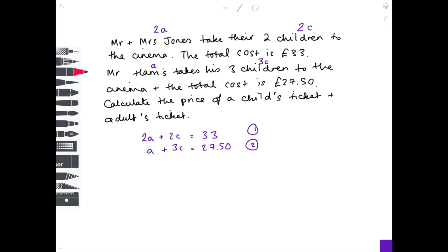Equation 1, equation 2. And I'm going to make the A coefficients the same by multiplying equation 2 by 2. So that becomes 2A plus 6C equals 55, and I'm going to call that equation 3. Cross out equation 2 because I'm done with it.